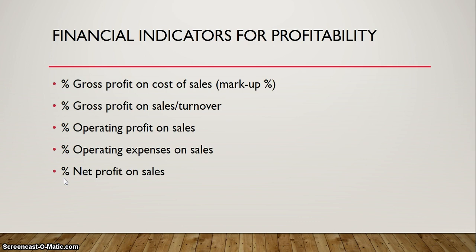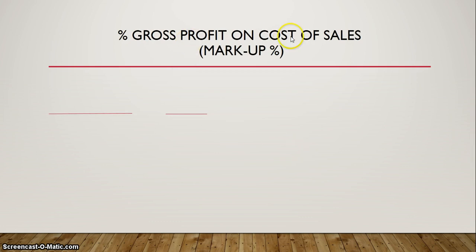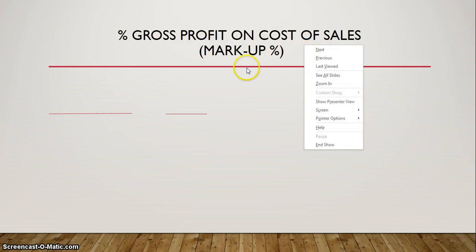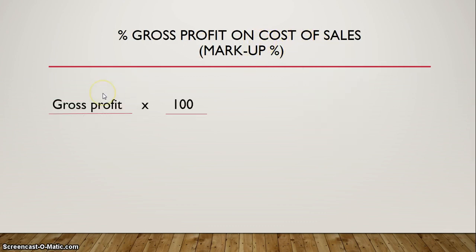One important thing to understand is that you do not need to memorize these financial indicators. You do not need to memorize how you are going to calculate them, because the way you calculate them is in the financial indicator itself. For the percentage gross profit on cost of sales — your markup percentage — because it is a percentage, you multiply by 100 over 1. You simply take the gross profit over the cost of sales and multiply it by 100 over 1.